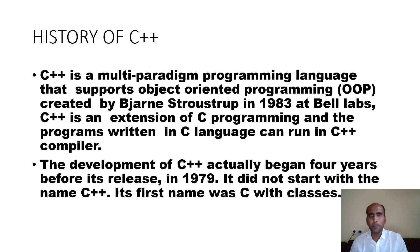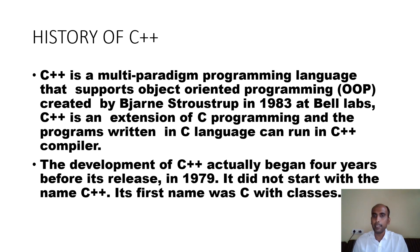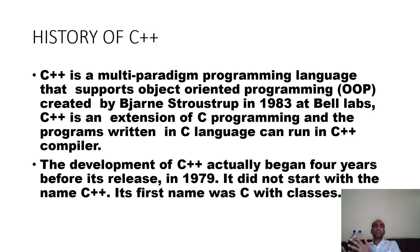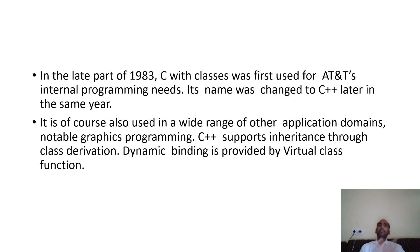C++ is an extension of C programming language and can be run using a C++ compiler. The development of C++ actually began four years before its release, in 1979. It didn't start with the name C++; earlier it was known as 'C with Classes,' meaning all concepts of C language plus the concept of class were included. In 1983, 'C with Classes' was renamed C++. The class concept was taken from a language called Simula 67.